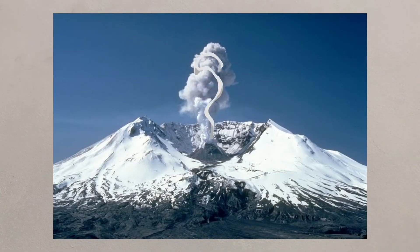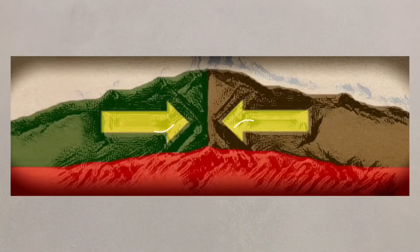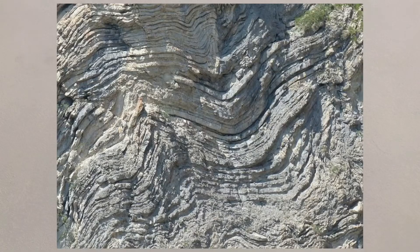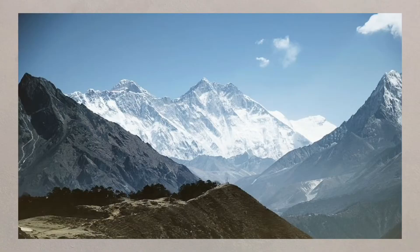There are also occasions where two continental plates will meet, such as at the Himalayas, but because they are both continental plates, there is no subduction. Rather, the land is folded and crumpled, creating mountains at this collision margin.